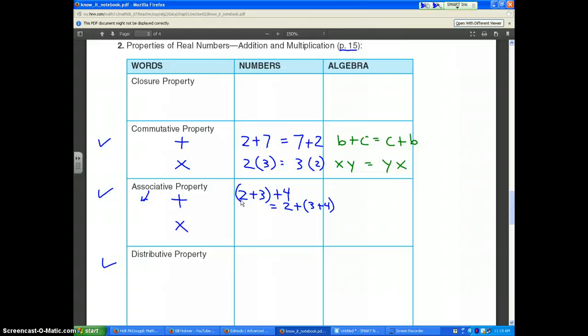The associative property is basically moving the parentheses. Same is true for multiplication. If I want to go (2 times 3) times 4, that's the same as 2 times (3 times 4). You get the same answer. So the associative property is where you move the parentheses.